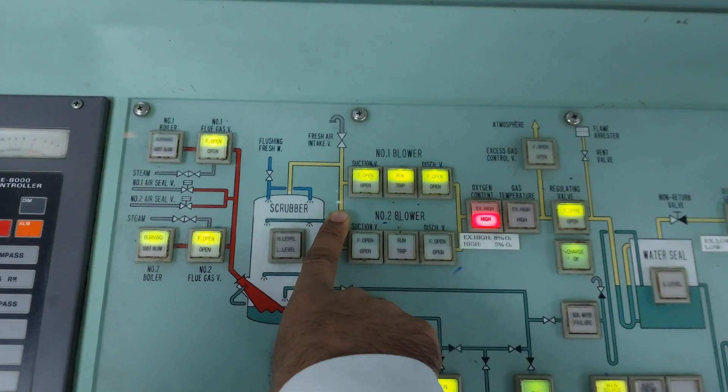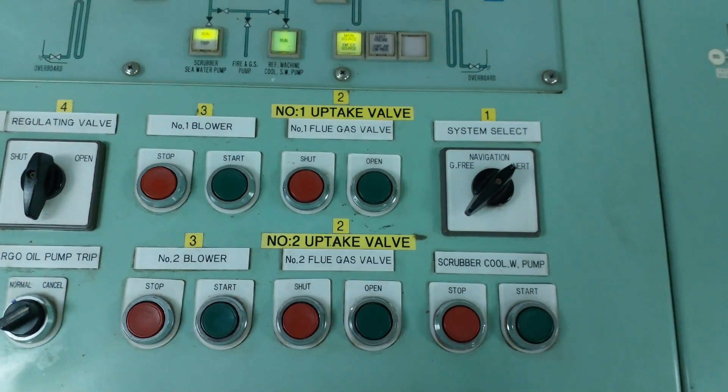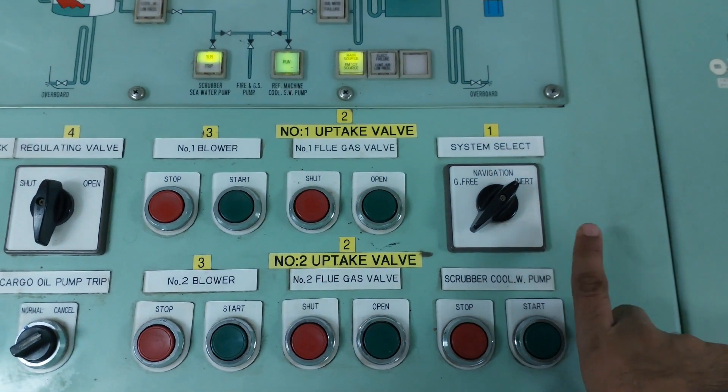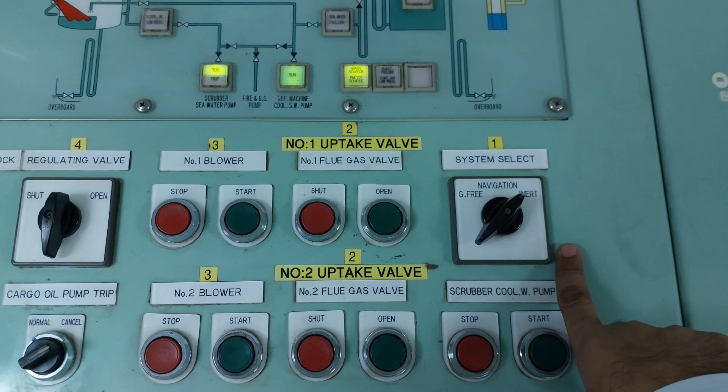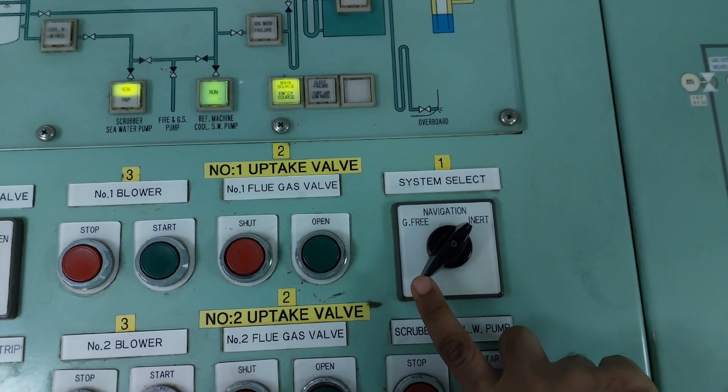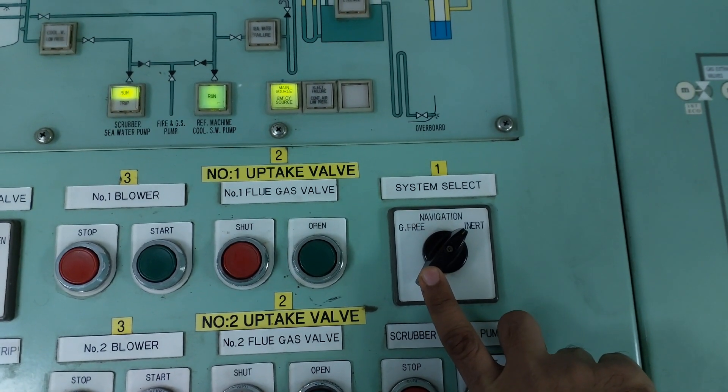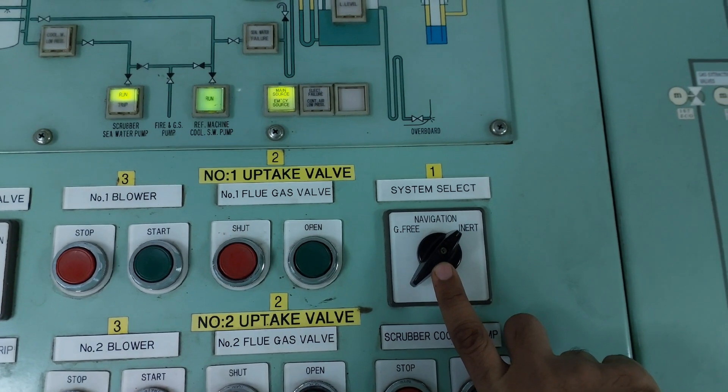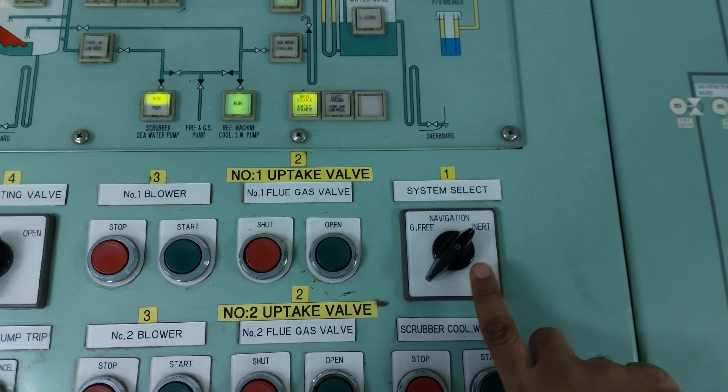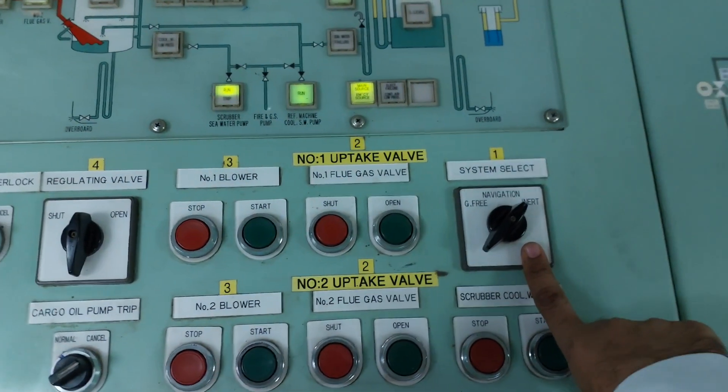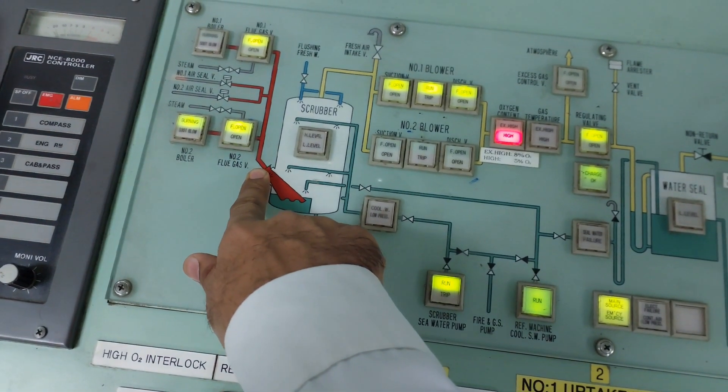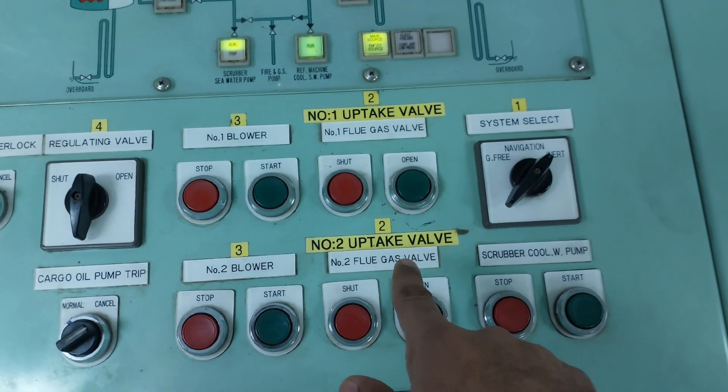Here are the controls. There are numberings for our easiness. Number one would be to put it to the inert mode. There are two modes: gas-free mode, inerting mode, and navigation mode. Currently we are discharging, so this is on inerting. We put it to inert, and then the uptake valve they asked us to open, uptake valve number two, so we started this uptake valve number two.